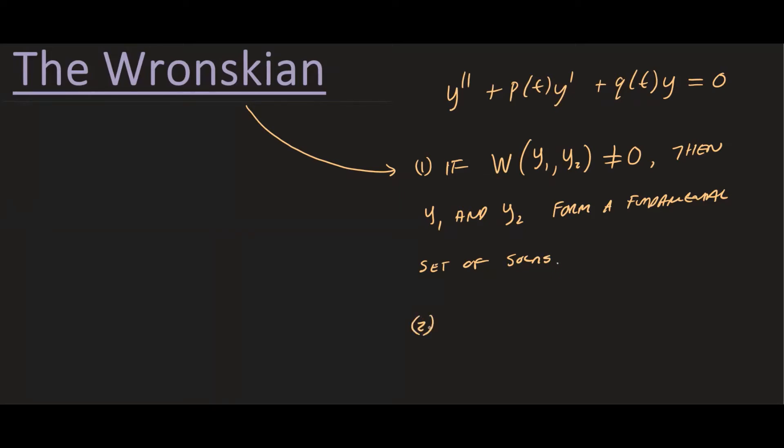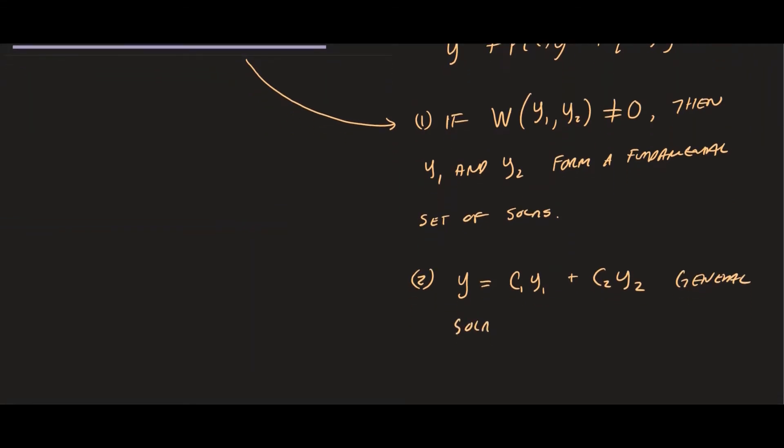Second, if that is the case, then we know that the general solution y is going to be the linear combination c1*y1 + c2*y2. Then this will be the general solution. And also because of the consequence number two, we can also say that these solutions y1 and y2 are linearly independent. Something that you should be familiar with is linearly independent, meaning the two solutions are not multiples of each other. That's what it means to be linearly independent.